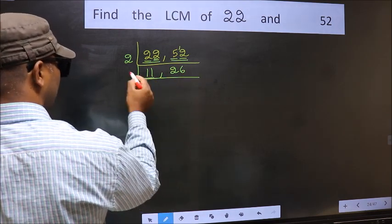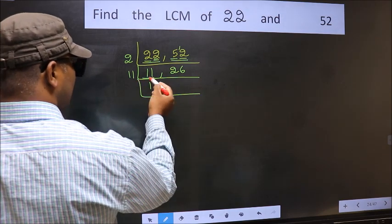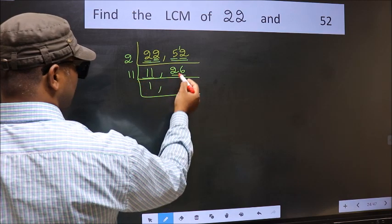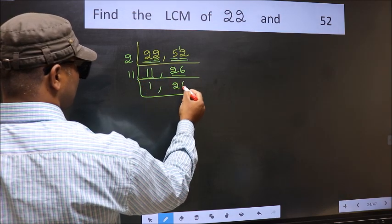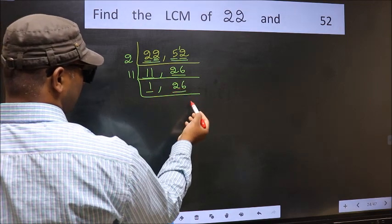Now here we have 11. 11 is a prime number, so 11 times 1 is 11. The other number 26 is not divisible by 11, so we write it down as it is. We got 1 here, so focus on the other number 26.